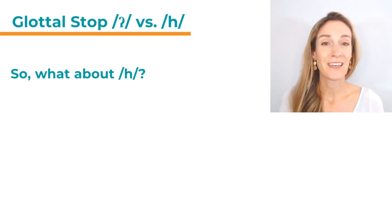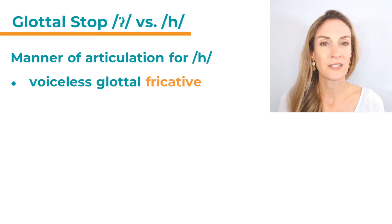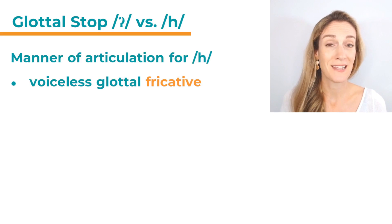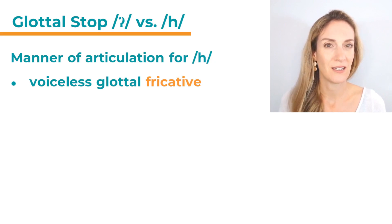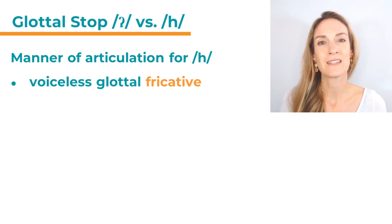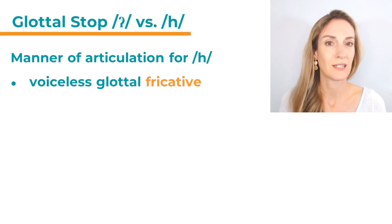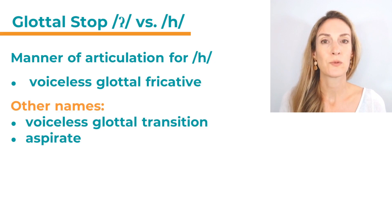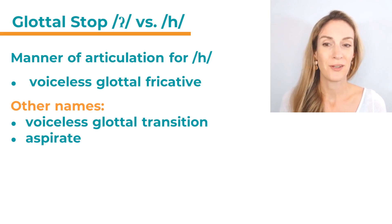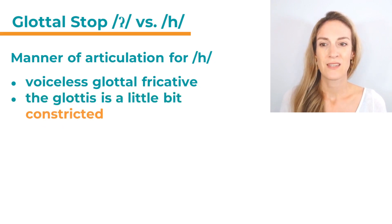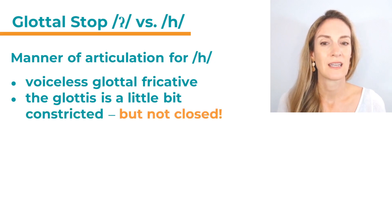So what about our other sound — the h sound? Let's have a look at the manner of articulation here. First of all, h is voiceless — we said that already; voiceless is the same as unvoiced, just a different word for it. So it's a voiceless glottal fricative. Now some of you might say it's not classified as a fricative anymore — that is true. You will find some phonology books that say it is and some that say it isn't. We still usually call it a voiceless glottal fricative. However, it does have two other names: sometimes it's called a voiceless glottal transition, and sometimes it's also referred to as an aspirate. All three names refer to the sound h. The glottis is a little bit constricted, but not closed — so that's very different to the glottal stop.